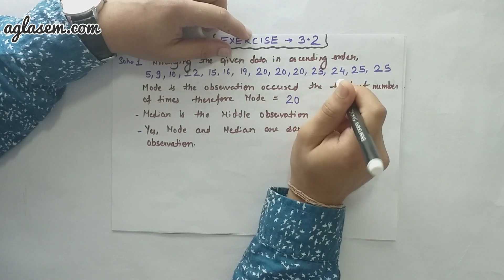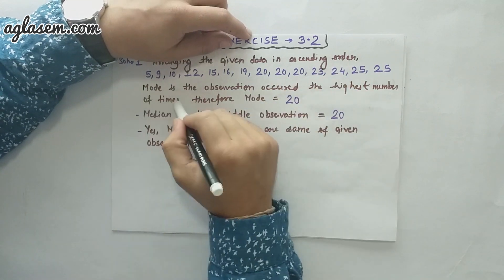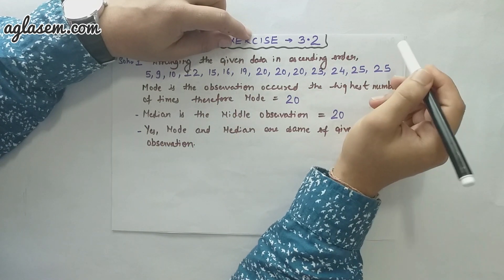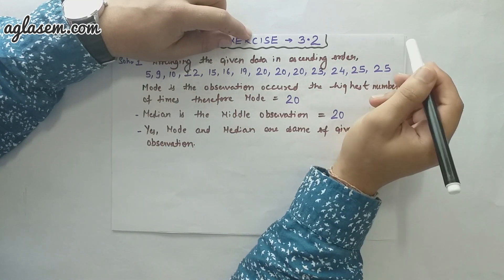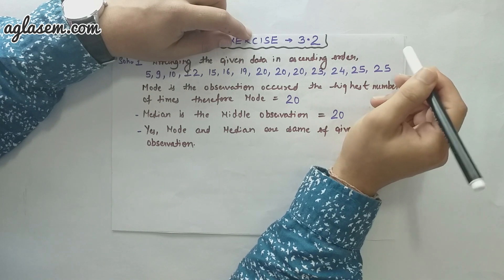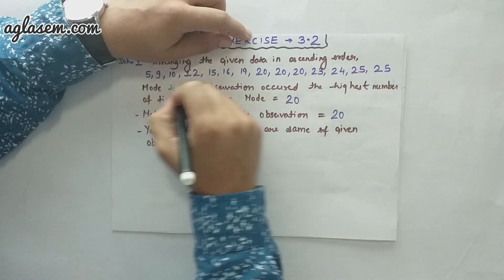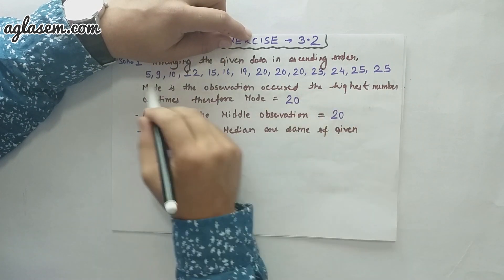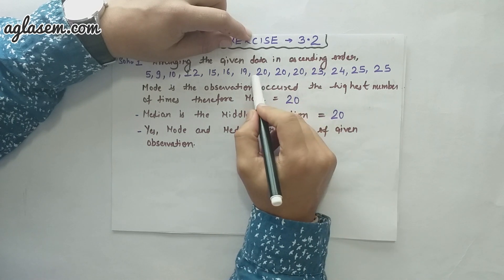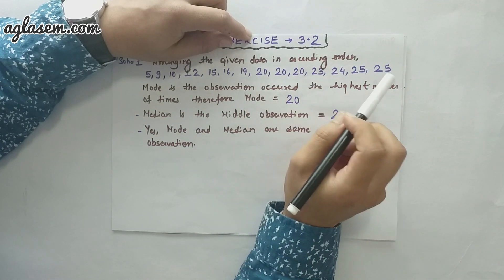For the first part, we have to calculate the mode. Mode is the observation that occurs the highest number of times. Therefore, the mode is 20 because 20 is the only number which is repeated three times in this data.